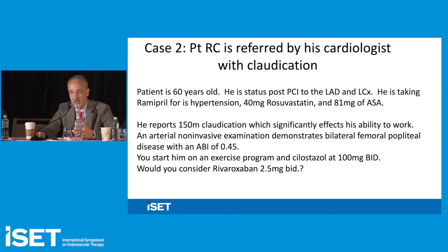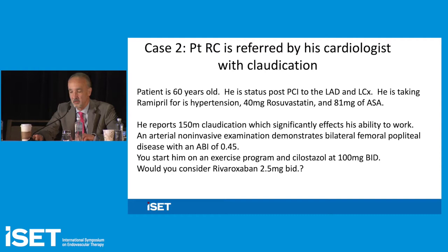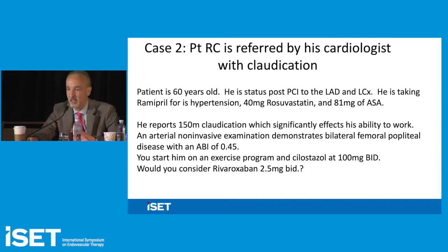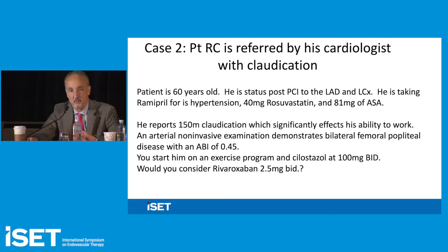He's clearly claudicating, got a horrible ABI from bilateral fem-pop disease. He's starting an exercise program and cilostazol, which does improve walking distance based on science. Rivaroxaban is not going to change his claudication distance — we should differentiate that. It doesn't mean rivaroxaban isn't useful; it just won't help with what he's presenting with. Rivaroxaban at this dose, not with cilostazol but with low-dose aspirin, would be useful because he's got coronary and peripheral arterial disease — he's a polyvascular patient at higher risk.